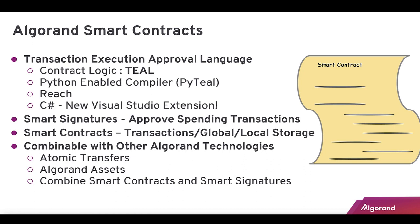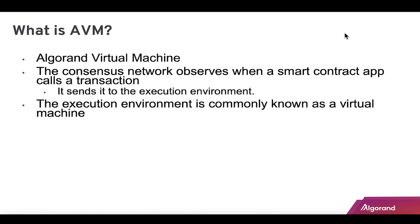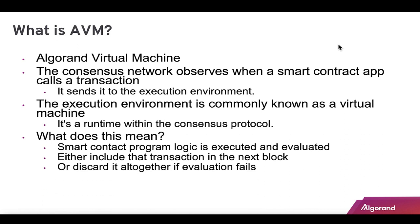Smart signatures approve spending transactions — they return true or false. Smart contracts also have the ability to do transactions, provide global state for the entire blockchain, or local state based on the account — like keeping a counter per account. These are all combinable with other Algorand technologies: atomic transfers, assets, and smart contracts. The Algorand Virtual Machine (AVM) is the execution environment — a runtime within the consensus protocol. Smart contract logic is executed, and either the transaction is included in the next block or discarded if evaluation fails.